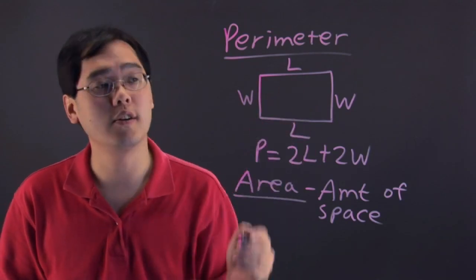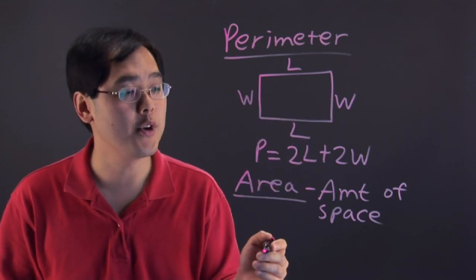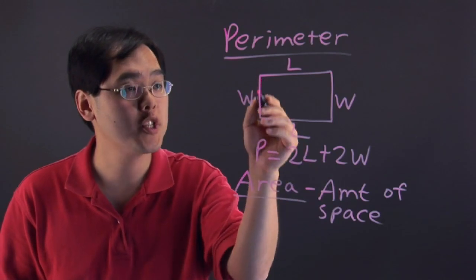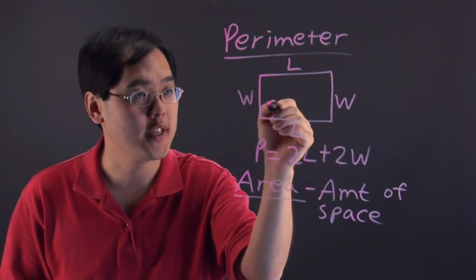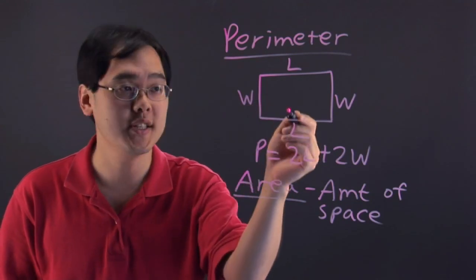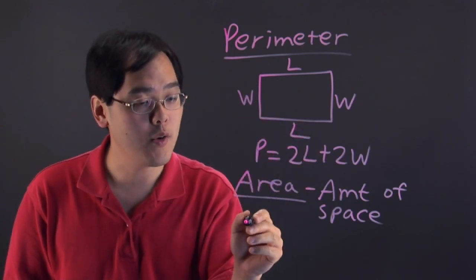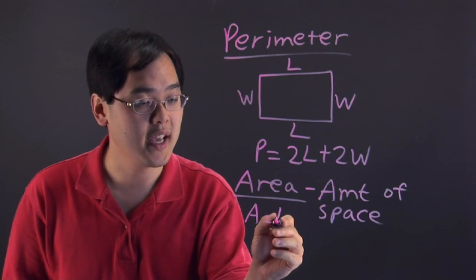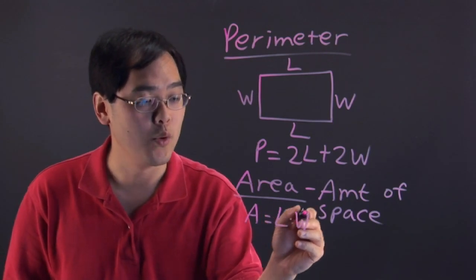So using the rectangle, as we had before for perimeter, we're talking about how much space is inside the rectangle itself. So perimeter, we're talking about the outside. Area, we're talking about the inside. And as you might remember from before, the area of a rectangle is length times the width.